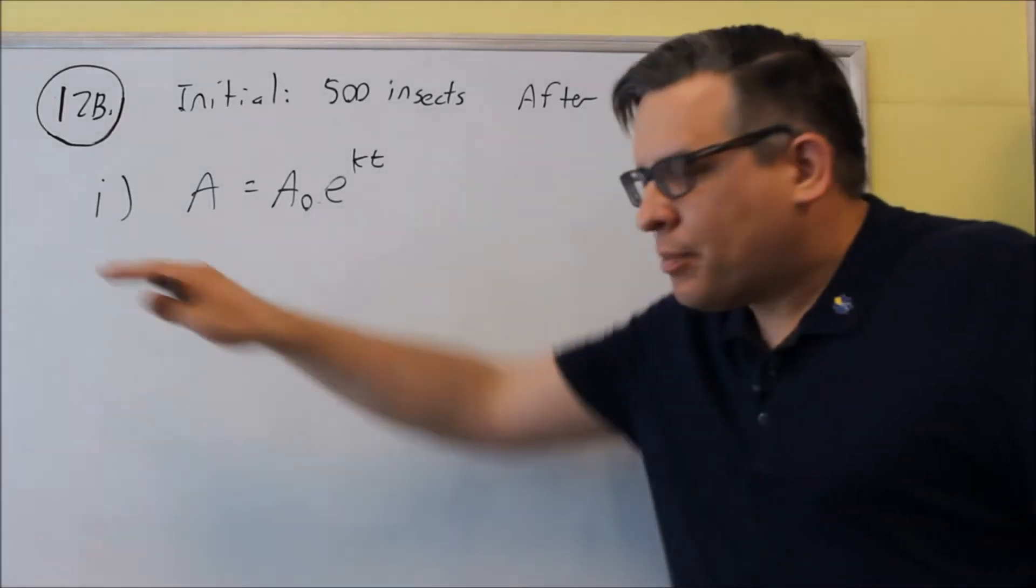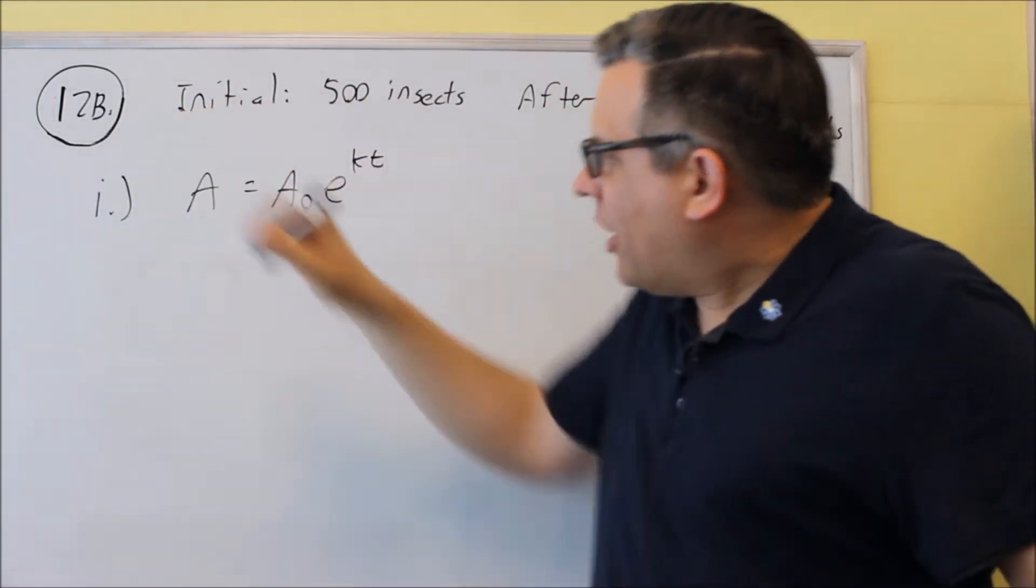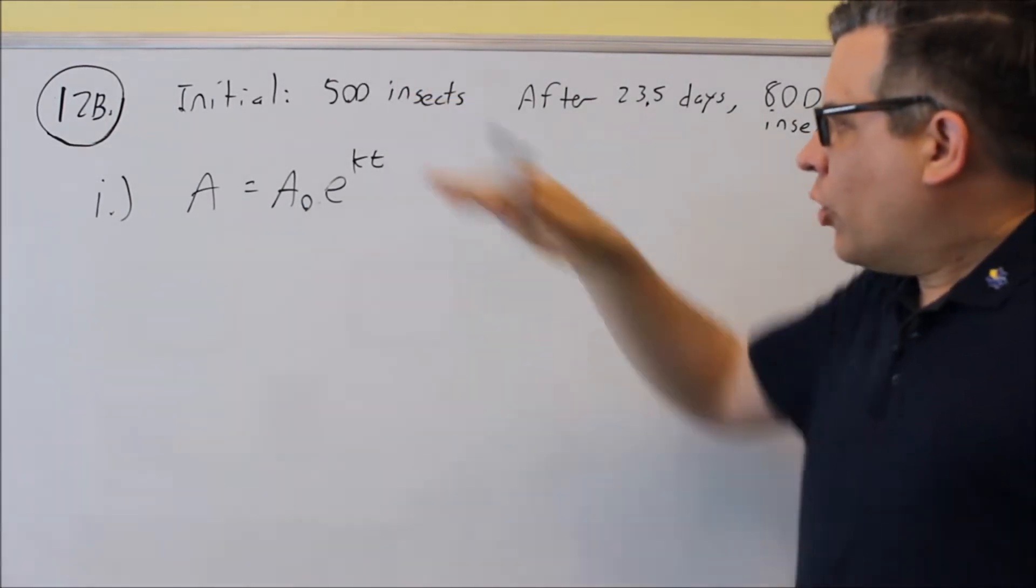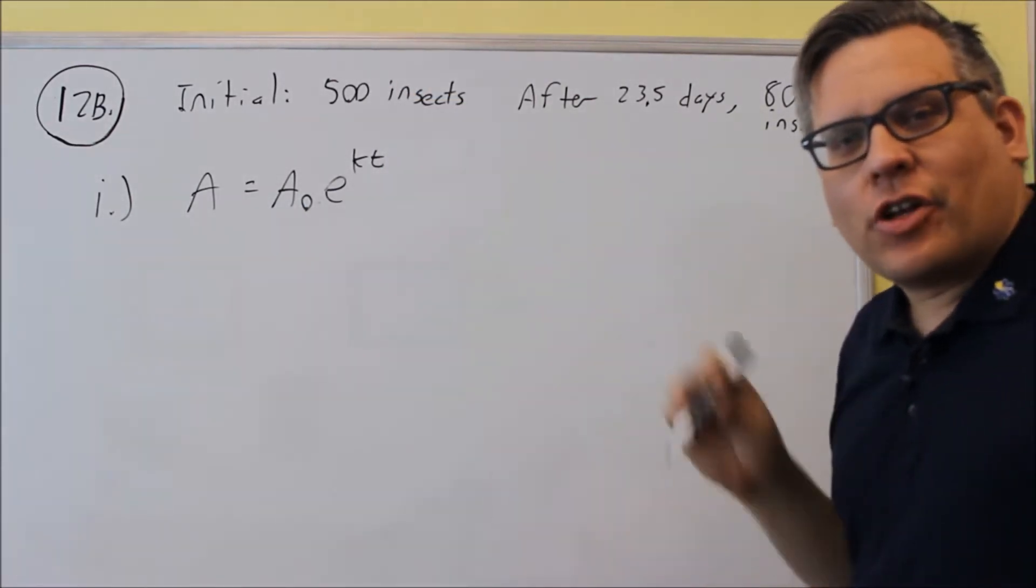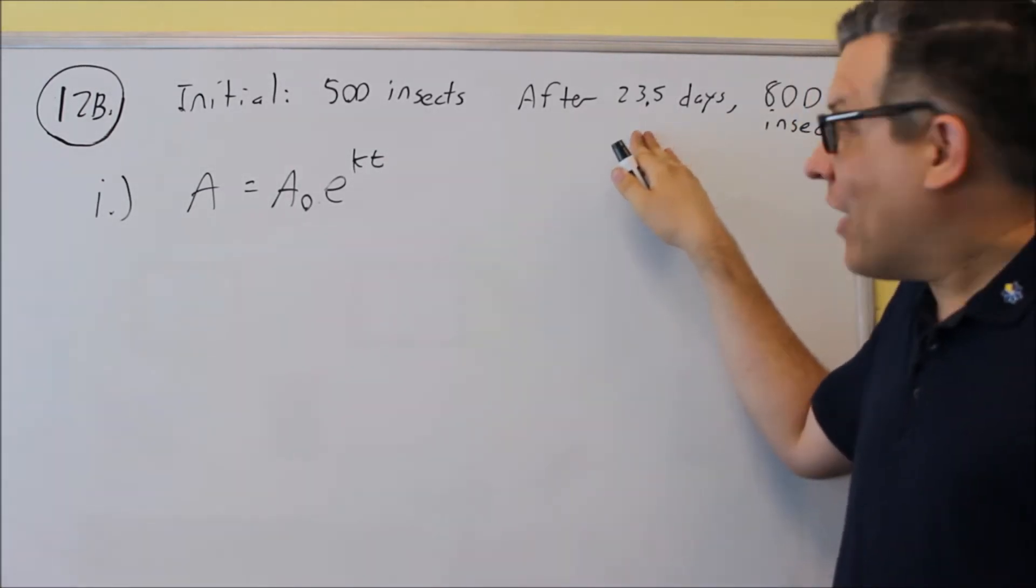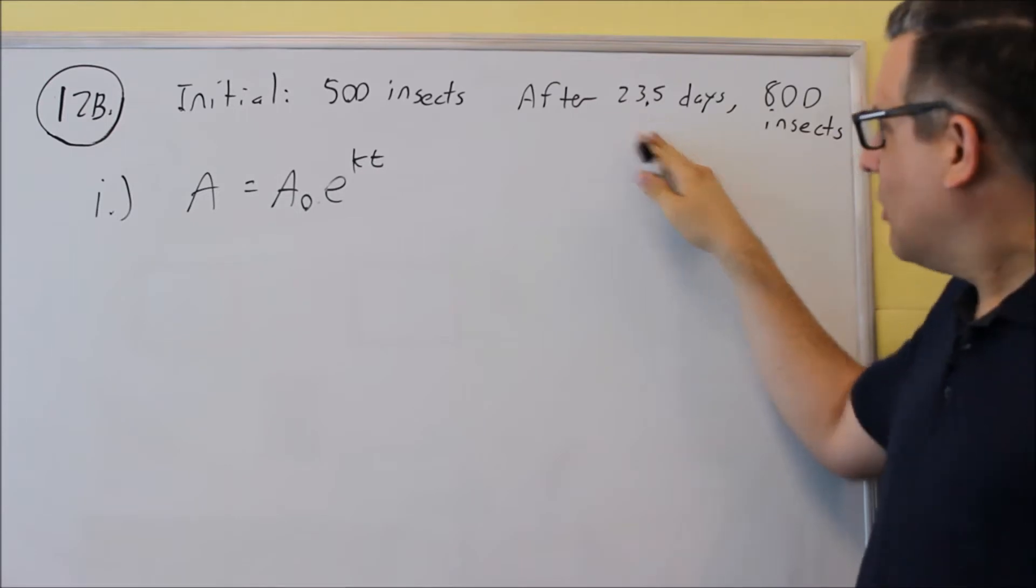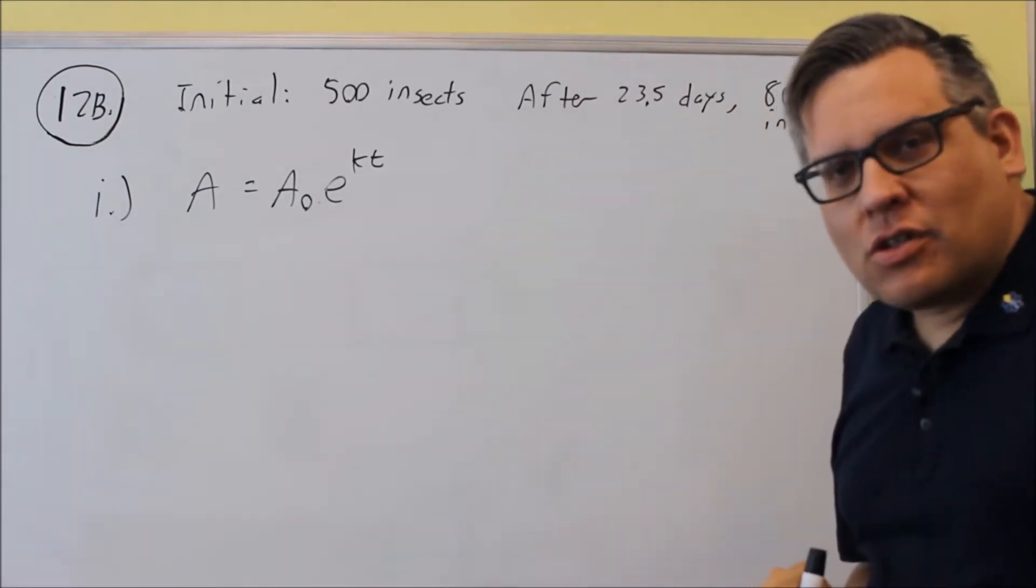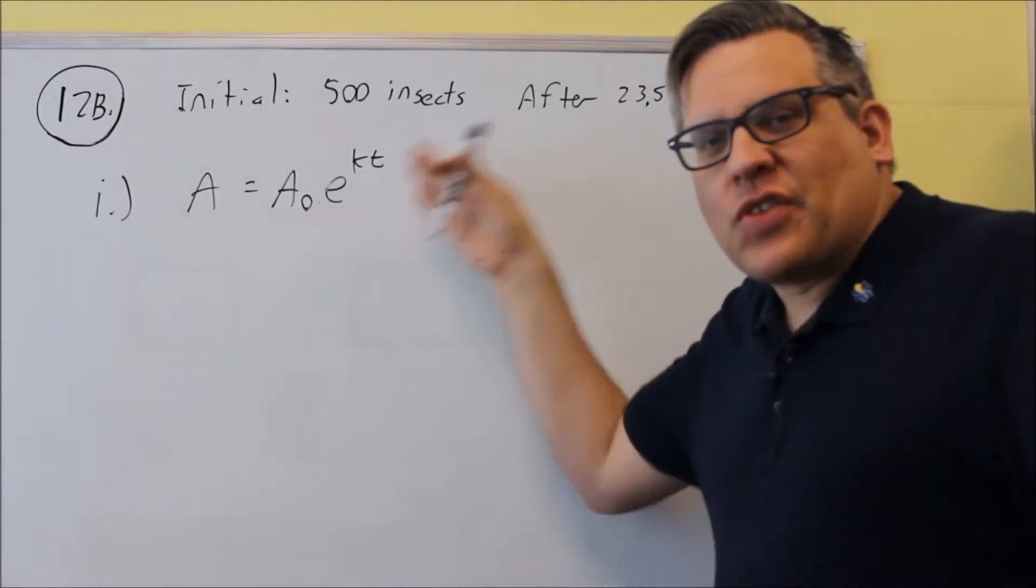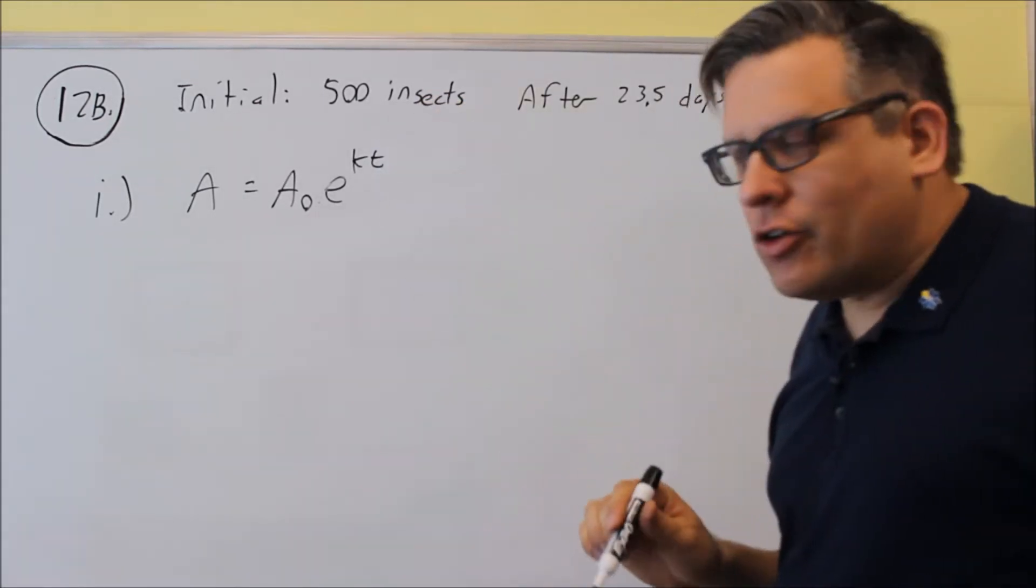Okay, for 12B, Part I, again we're going to use the general growth formula here. We're given that we start with 500 insects in a certain population, and it says after 23.5 days, then it's 800 insects. So we need to figure out what the specific growth formula is for this one, so we've got to find the K value.